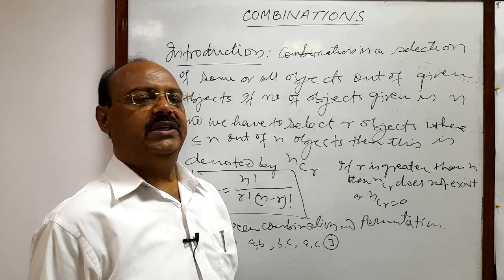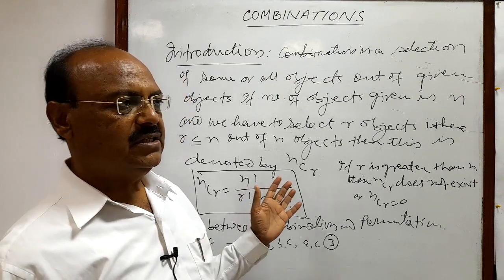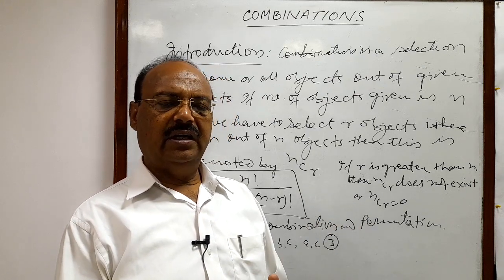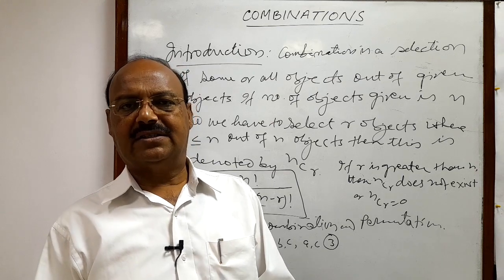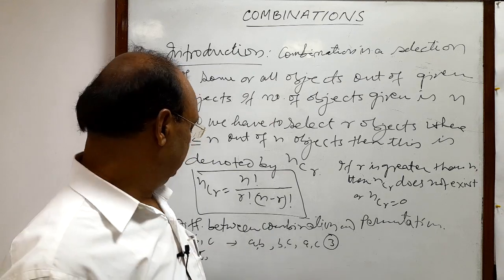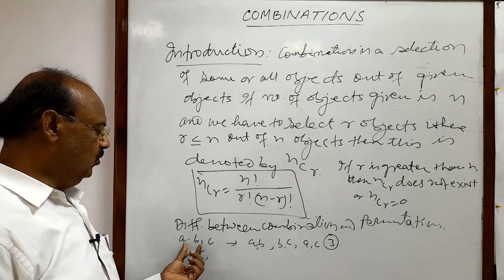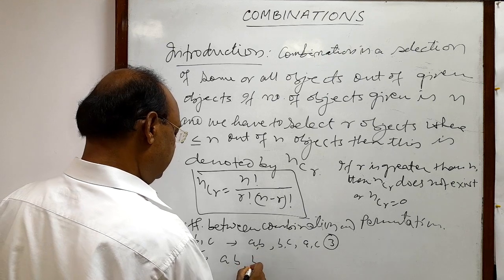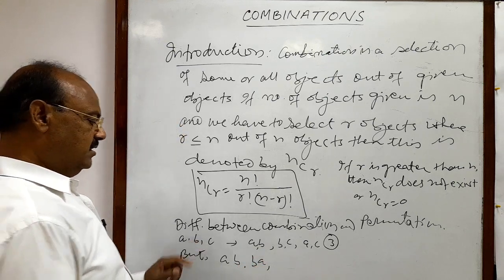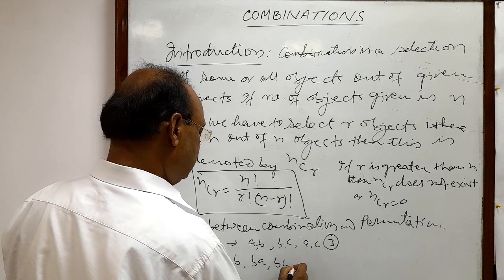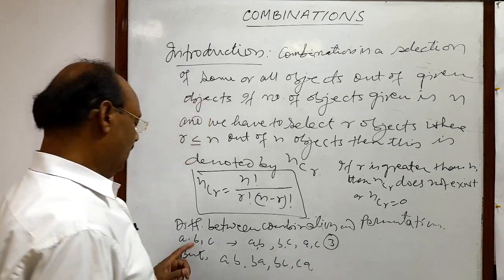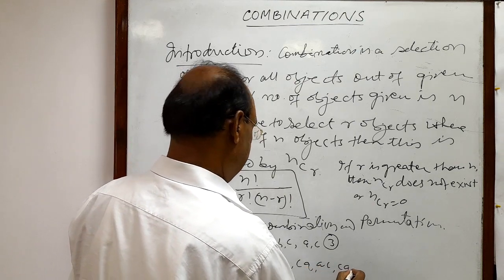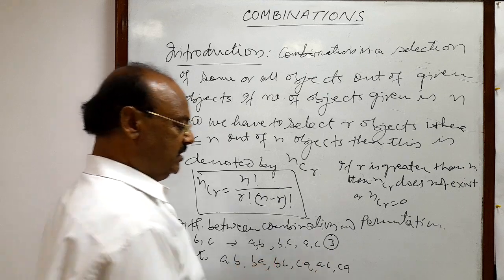But in the case of permutation, we will have six possibilities of arrangements, because permutation is a selection followed by arrangement. If we select A and B, arrangements are AB and BA; if we select B and C, arrangements are BC and CB; if we select A and C, arrangements are AC and CA. So the total number of arrangements is six.